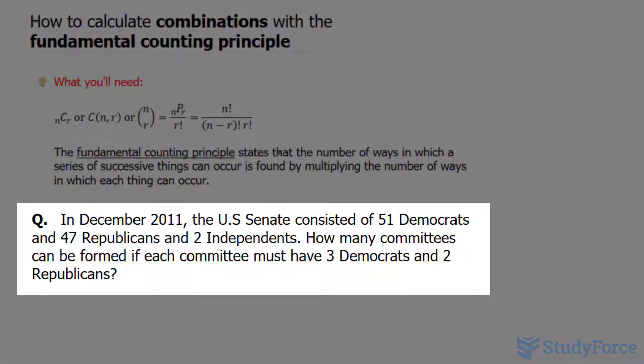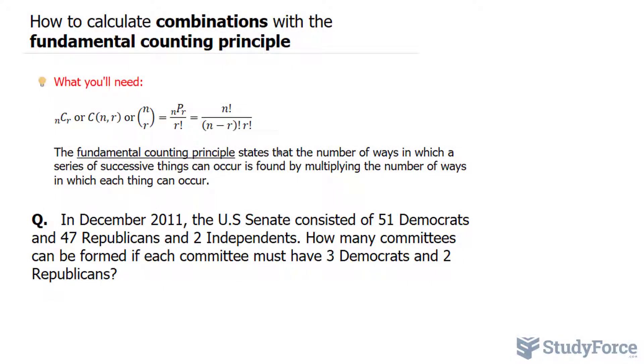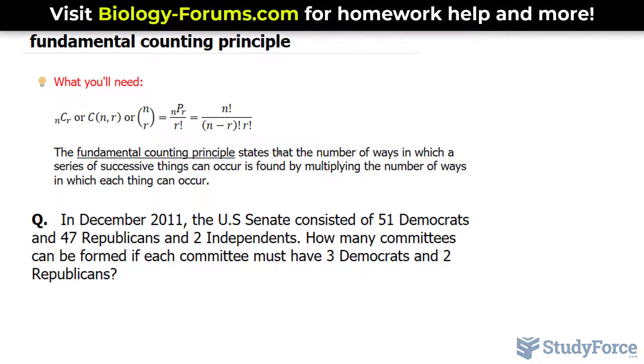With that being said, the question reads: In December 2011 the US Senate consisted of 51 Democrats, 47 Republicans, and 2 Independents. How many committees can be formed if each committee can have 3 Democrats and 2 Republicans?